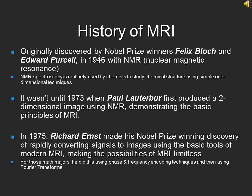However, it wasn't until almost 30 years later, when in 1973, Paul Lauterberg demonstrated the basic principles of MRI by producing a two-dimensional image of a test tube using NMR. From there, the evolution of MRI took off. In 1975, Richard Ernst made his Nobel Prize winning discovery of rapidly converting signals to images using the basic tools of modern MRI, making the possibilities of MRI limitless. For those math majors, he did this using phase and frequency encoding techniques, and then using Fourier transforms to produce an image.